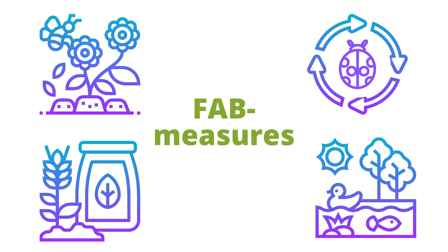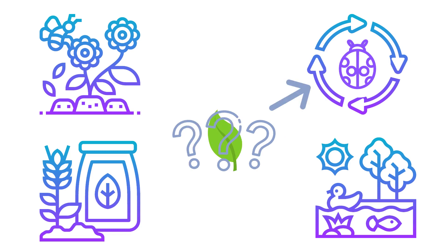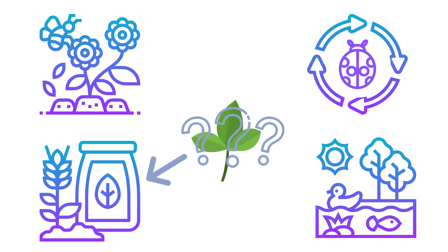But the story is not as easy as that. Depending on how the implementation is done, or the species that are chosen, the highest impact may switch from one ecosystem service to another. On top, a combination of FAB measures can have more impact than single actions.